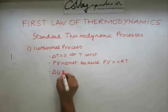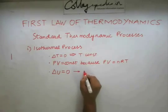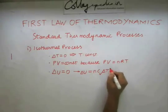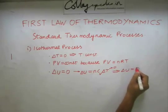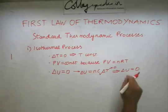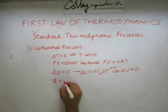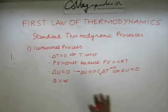Because T is constant, ΔU will also be zero. This is because ΔU depends on temperature, and since temperature is not changing, ΔU goes to zero. Because ΔU is zero, the first law of thermodynamics reduces to Q = W. These are the basic properties of an isothermal process.